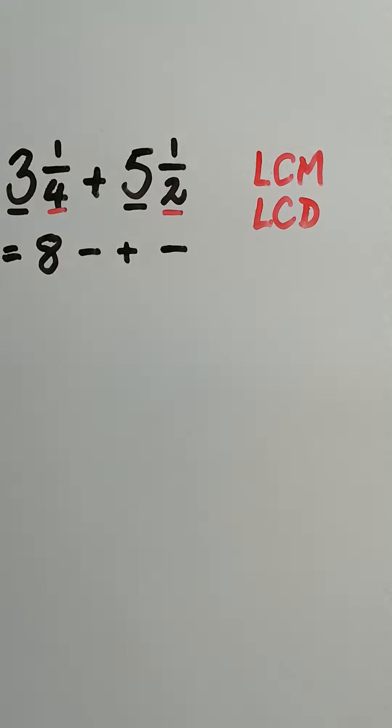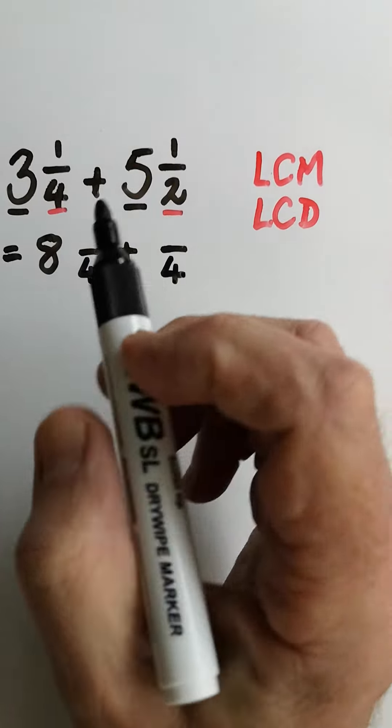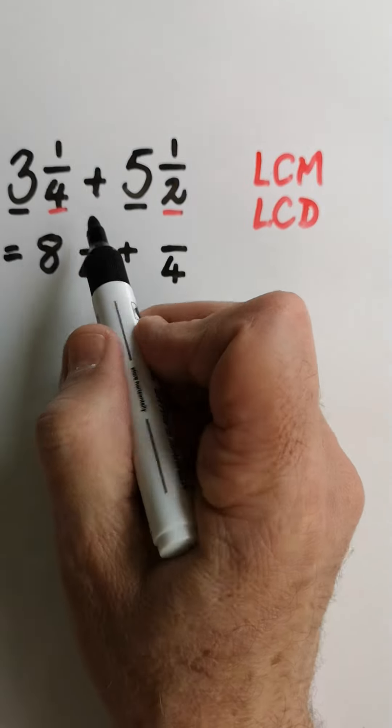That is the lowest number that four and two will be able to divide into. So let's make the denominators the same, and that will stay the same.